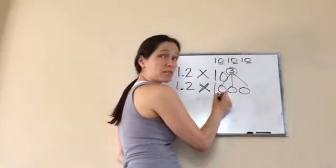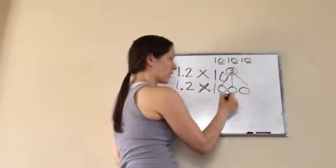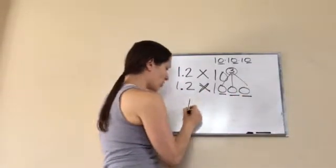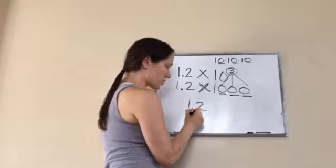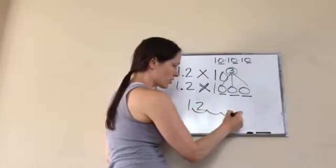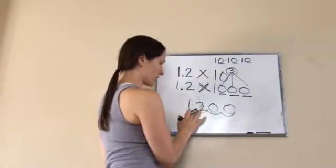So, ready? Count how many spots. I'm going to move it. Three. Okay. 1, 2, 3. You're exactly right. So, 1.2 becomes 1, 2, 3. Which makes it 1,200.